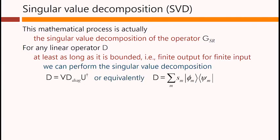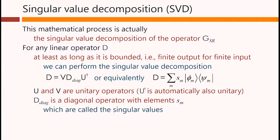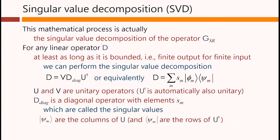and here, involving the functions. These are exactly the same, by the way. U and V here are unitary operators, that is, power-conserving operators, if you like. D-diagonal here is a diagonal operator with the elements S M. And these are called the singular values.